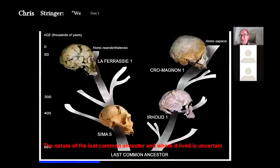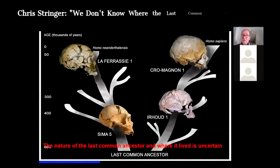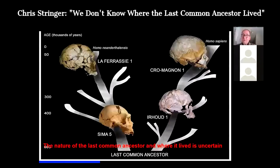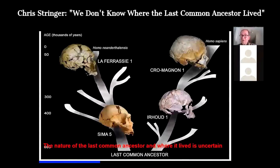Geneticists estimate that we had a common ancestor with the Neanderthal lineage probably more than 500,000 years ago, but who that ancestor was and where that ancestor lived is now much less certain. Stringer states: "I used to think the common ancestor was a species called Homo heidelbergensis, and now I'm not sure about that, and I'm not sure what continent that common ancestor lived on. It may have been in Europe, it may have been in Asia, it may have been in Africa."